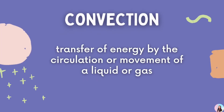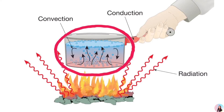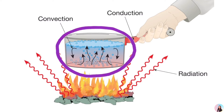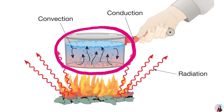Another mode of heat transfer is convection. This is the transfer of energy by the circulation or movement of a liquid or gas. When energy is added to a fluid, the particles move faster. In this example, the heated water in the casserole expands and becomes less dense.